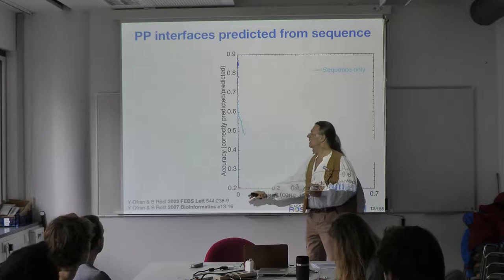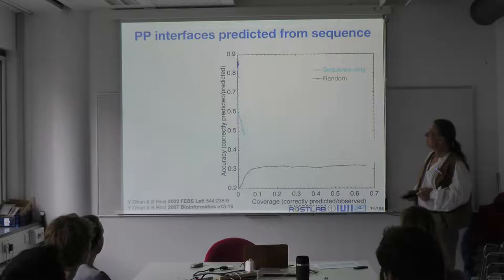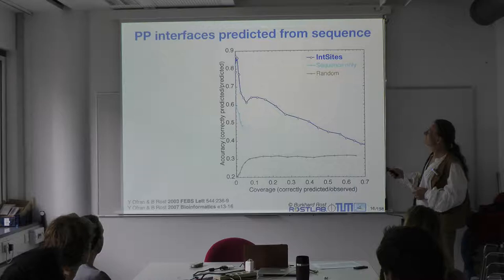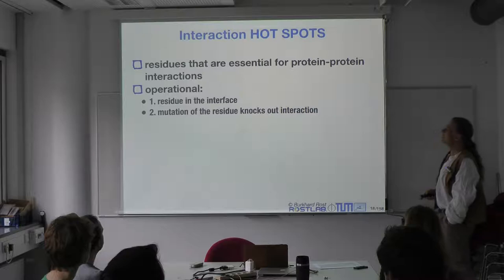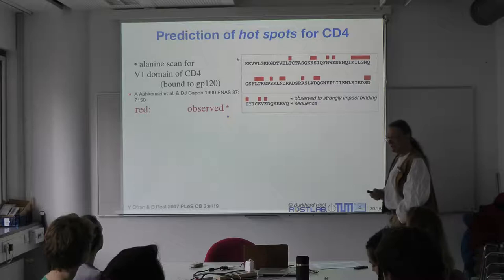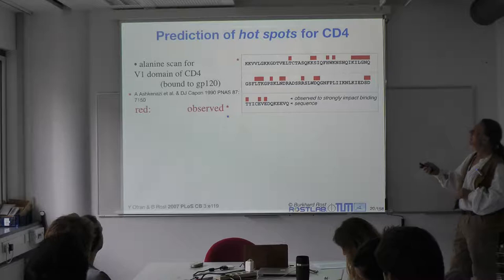Therefore, the highest ones here go somewhat up. Random is the background. When we use the evolutionary signal and all kinds of other features, we get a method that is way better — not only does it always beat random, but it reaches a fairly high level of significance. And those are hotspots — the most important residues to maintain protein-protein interactions, experimentally measured in red, predicted in purple.